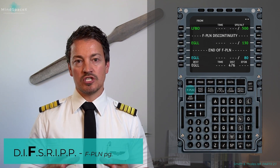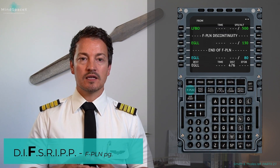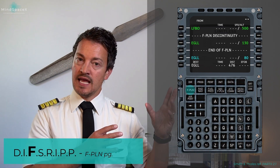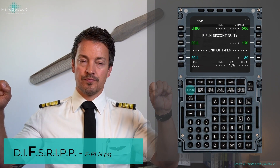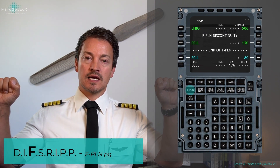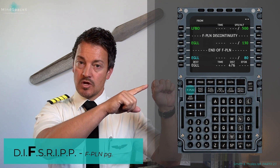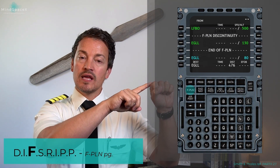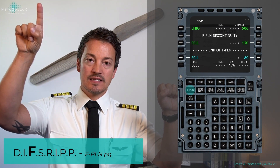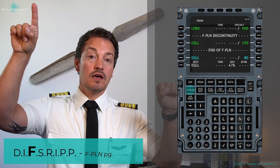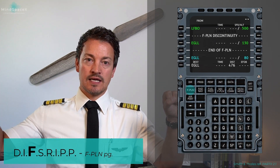When we build it, we build it in a certain sequence. We will start by selecting the from and the to — we now have the two points, but we need to connect them. From there, we will select the runway for use, the SID, and the waypoints that include the climb, the cruise, and the descent.